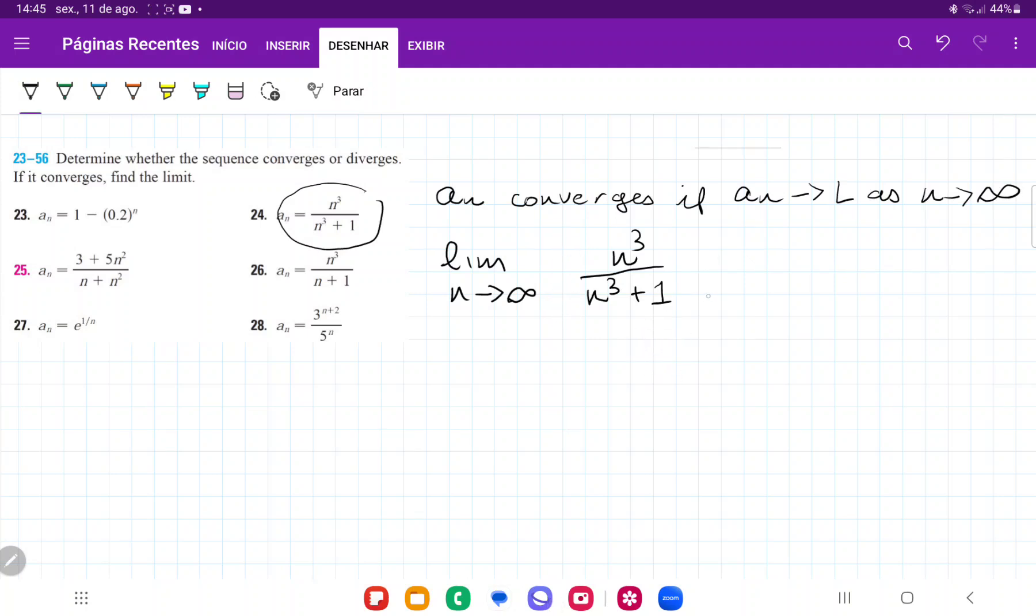So what we do here is we divide everything by 1 over n cubed on top and on the bottom. So this is equal to the limit as n approaches infinity of n cubed divided by n cubed is 1 over 1 plus 1 over n cubed.